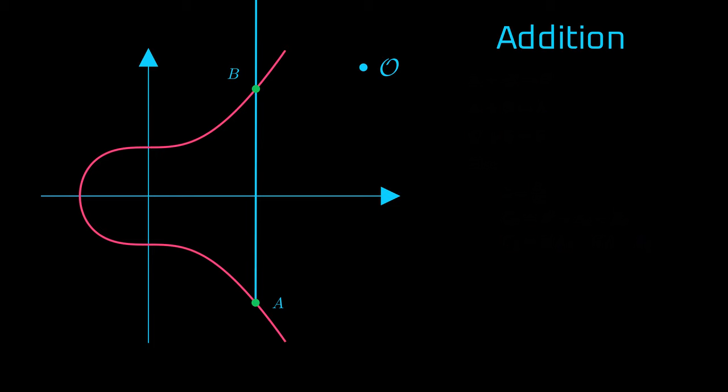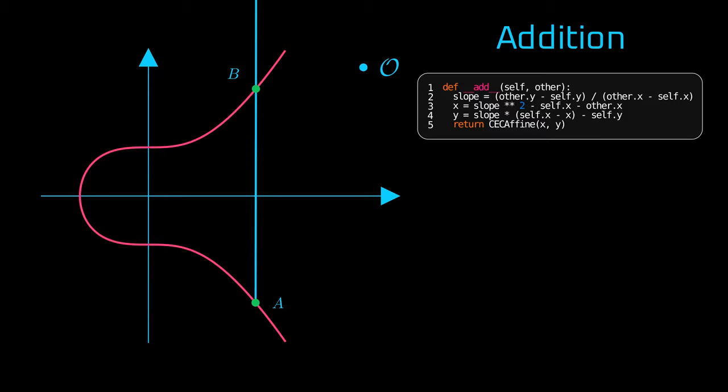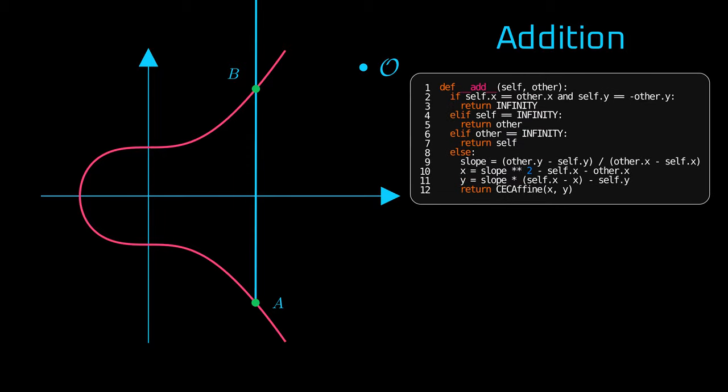We tracked the changes in the math. Now let's update the code. And again, we are rewriting math to Python code, almost one to one, supporting all three extra cases for addition with infinity point. And the common case remains unchanged.